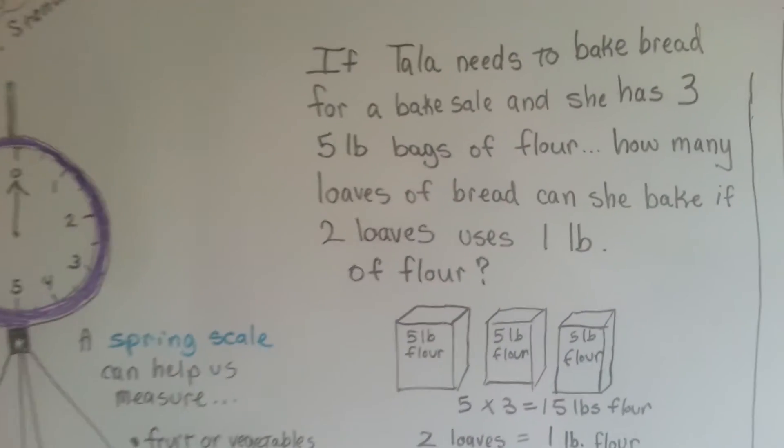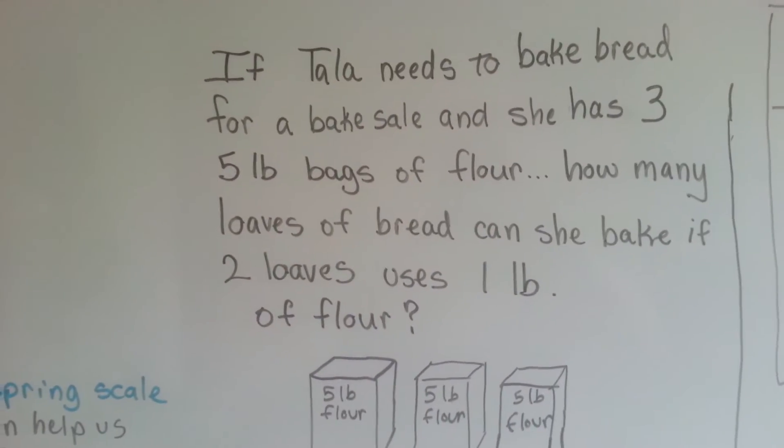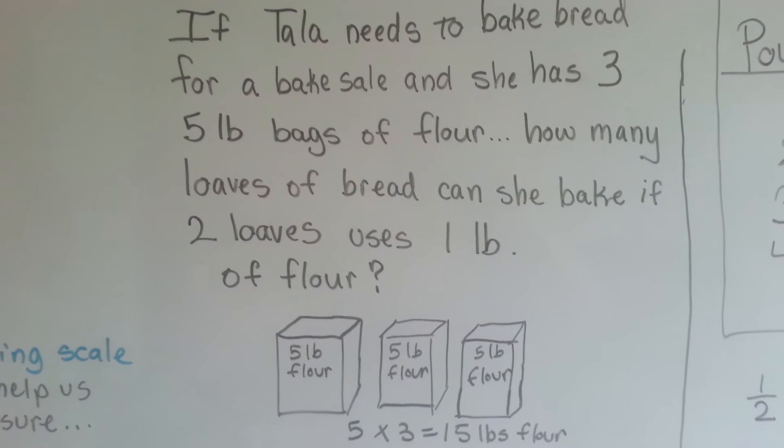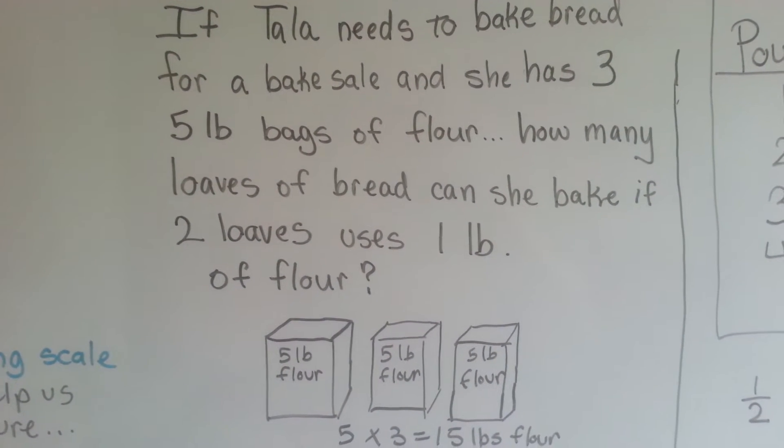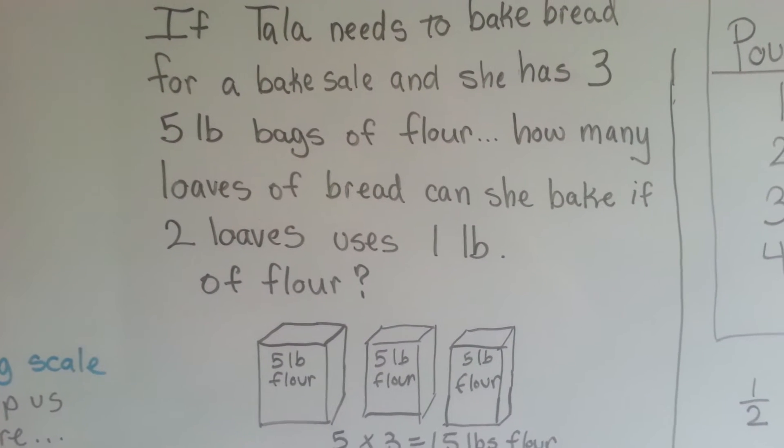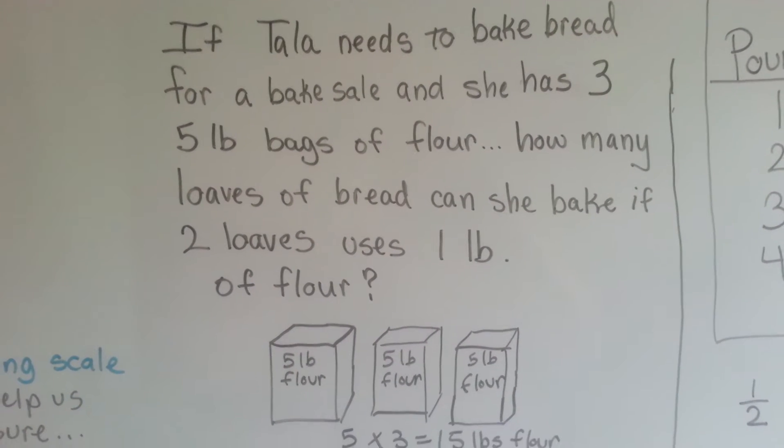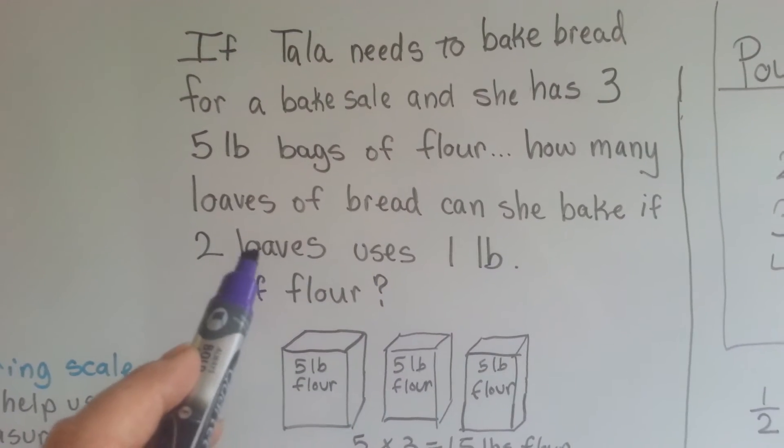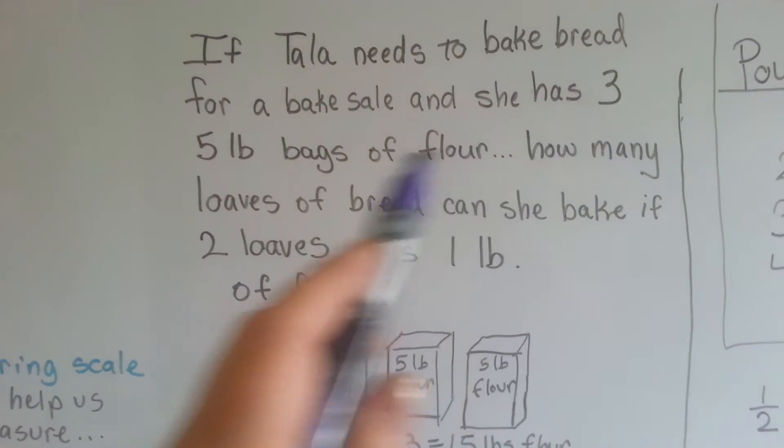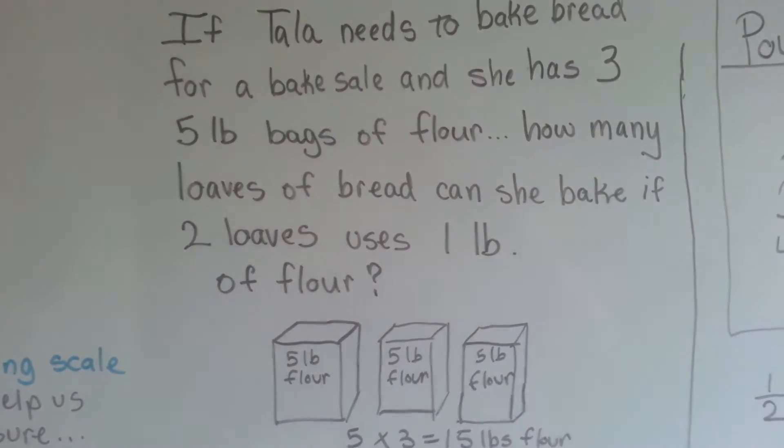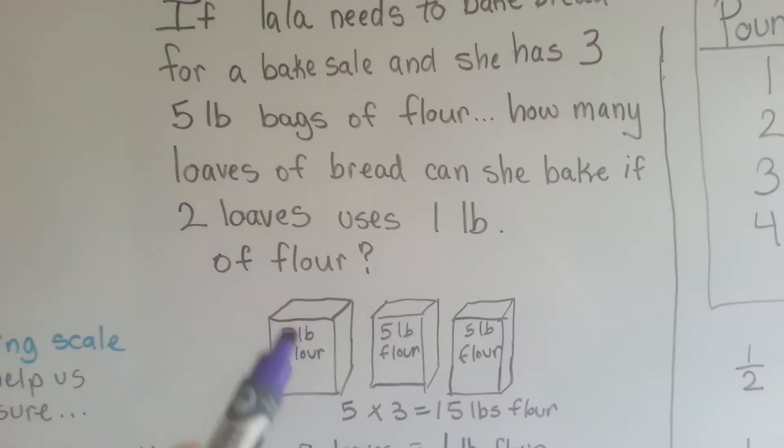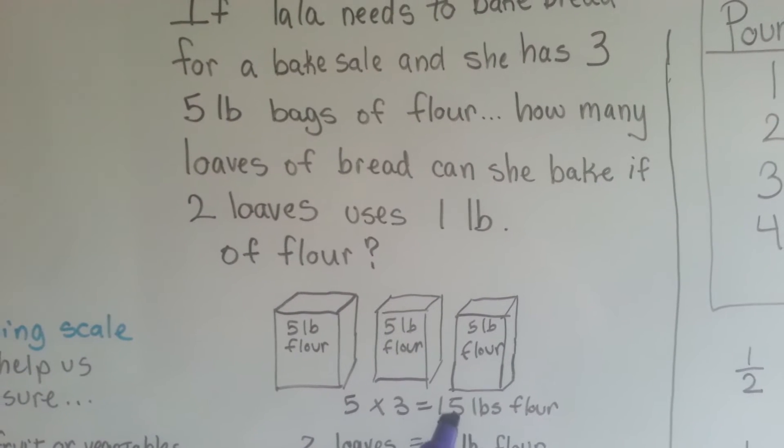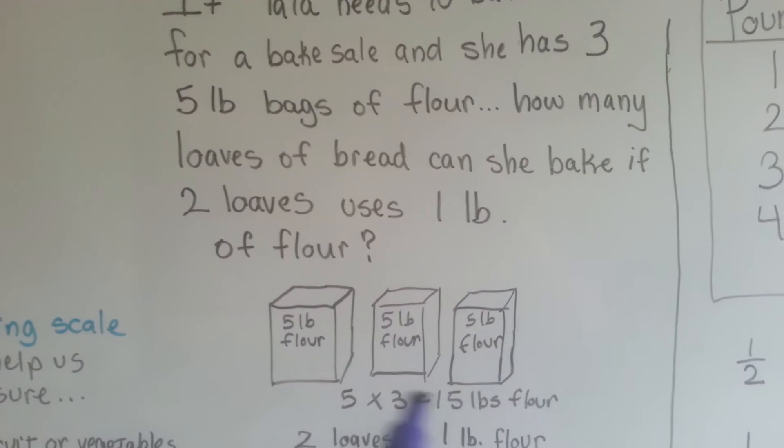So, if Tala needs to bake bread for a bake sale and she has three five-pound bags of flour, how many loaves of bread can she bake if two loaves of bread uses one pound of flour? So, for every one pound she gets two loaves of bread. She has three five-pound bags. So, let's figure out first how many pounds she's got. She's got three five-pound bags. Five times three is 15 pounds total.